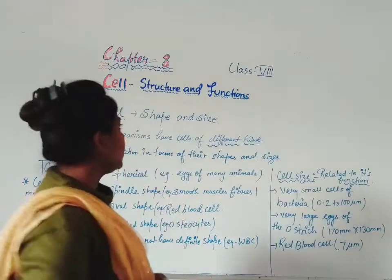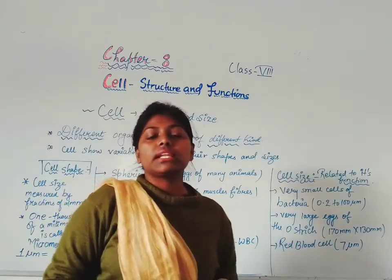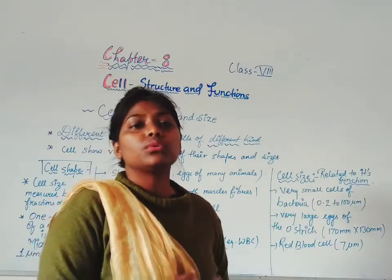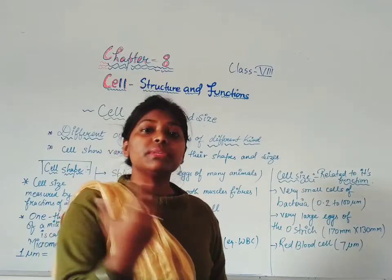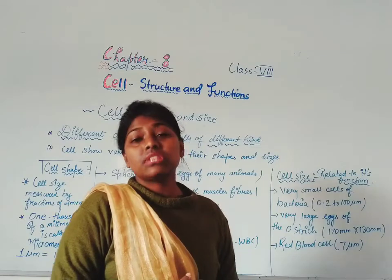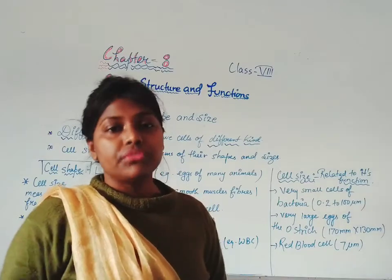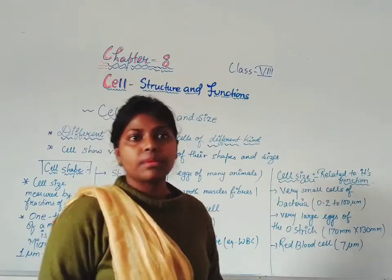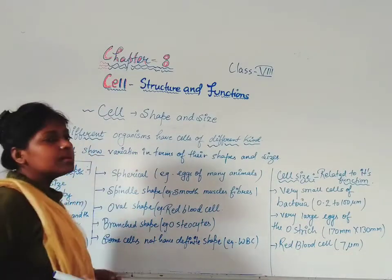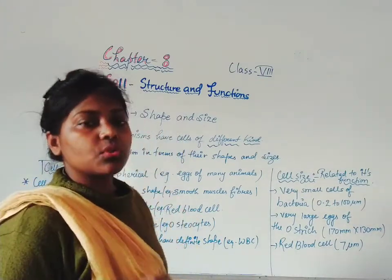Our next topic is cell shapes and size. In this topic, we will learn whether all cells have the same shape or whether different cells have different shapes, and whether all cells have the same size. Every cell's shape and size changes. Different organisms have cells of different kinds. Cells show variations in terms of their shape and size.